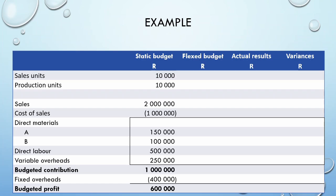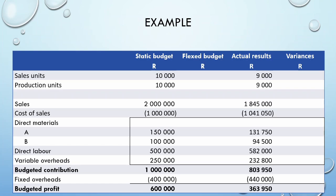We can fill in our static budget information directly from the scenario. We can also fill in our actual information directly from the scenario. Now we need to prepare the flexed budget. Our flexed budget output matches the actual output, so our actual sales and production units need to be used. We need to restate all our static budget figures based on our actual level of sales and production. Remember that items related to sales are flexed based on the sales units, whereas items driven by production are flexed based on the production units.